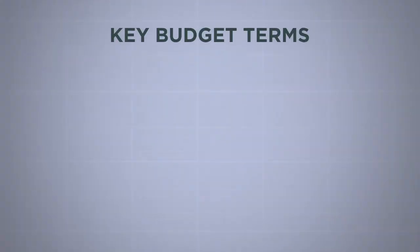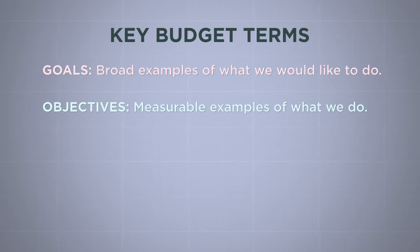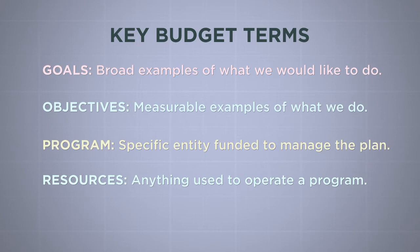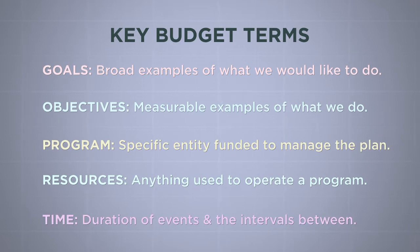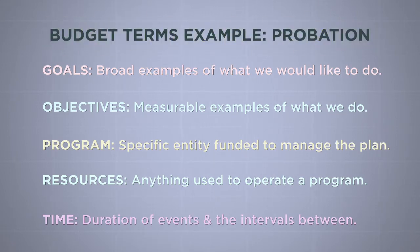It is important to understand some key terms before we learn how a budget is created. Goals are broad examples of what the government would like to do. Objectives are like goals, but they are specific and measurable examples of what the government does. A program is the specific entity that gets funded to manage the plan. Resources are things like employees and money that are used for operating the program. Time is the measurement of the duration of events and the intervals between them. We find examples of the budget process and these key terms in the budget book's D section.